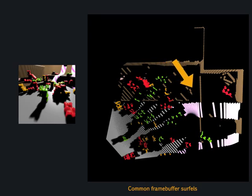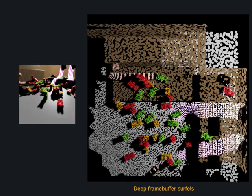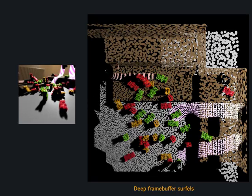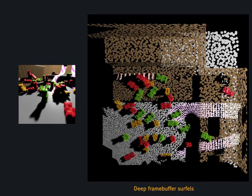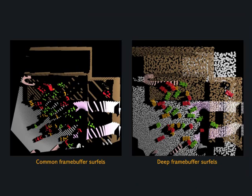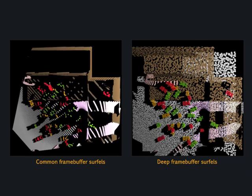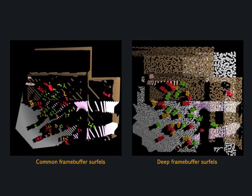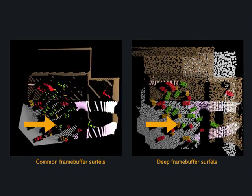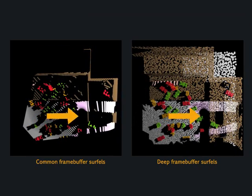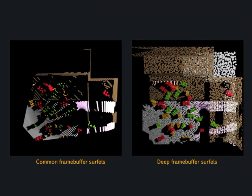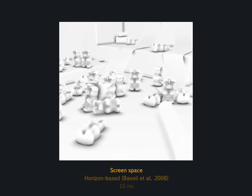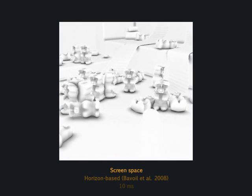In our approach we produce a deep frame buffer in which similarly more surfaces are created close to the camera, but without the limitations a common frame buffer has. In this comparison you see how occluded, out-of-frustum, and oblique surfaces are still present to contribute to the shading. In the following we will extensively compare deep frame buffers to common frame buffers and reference solutions.